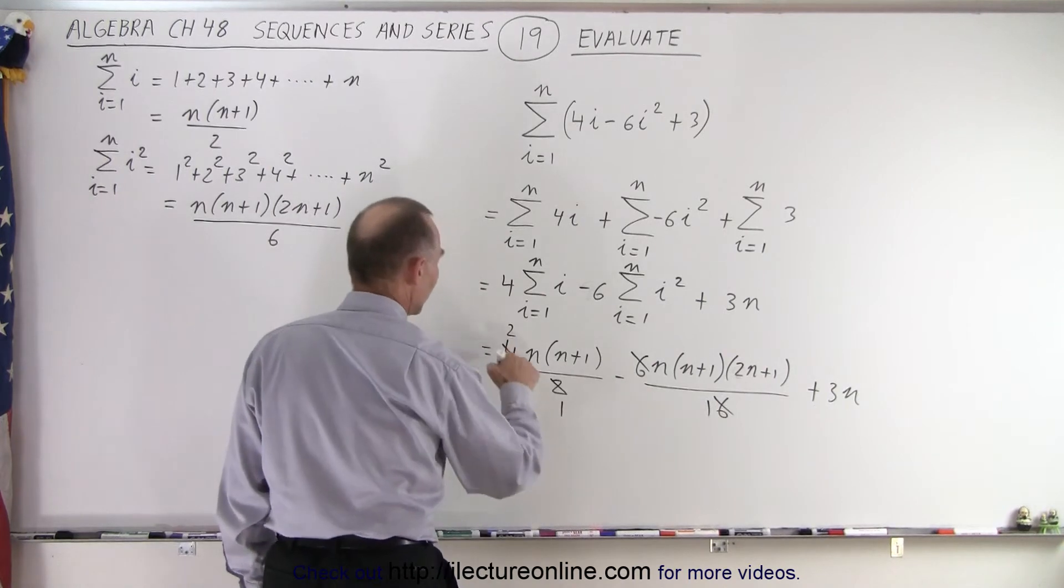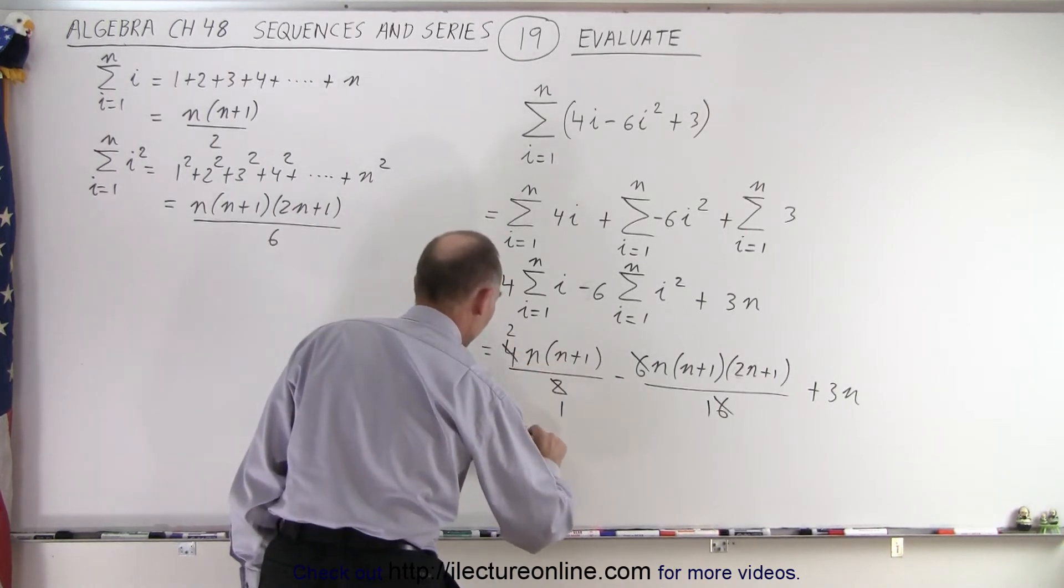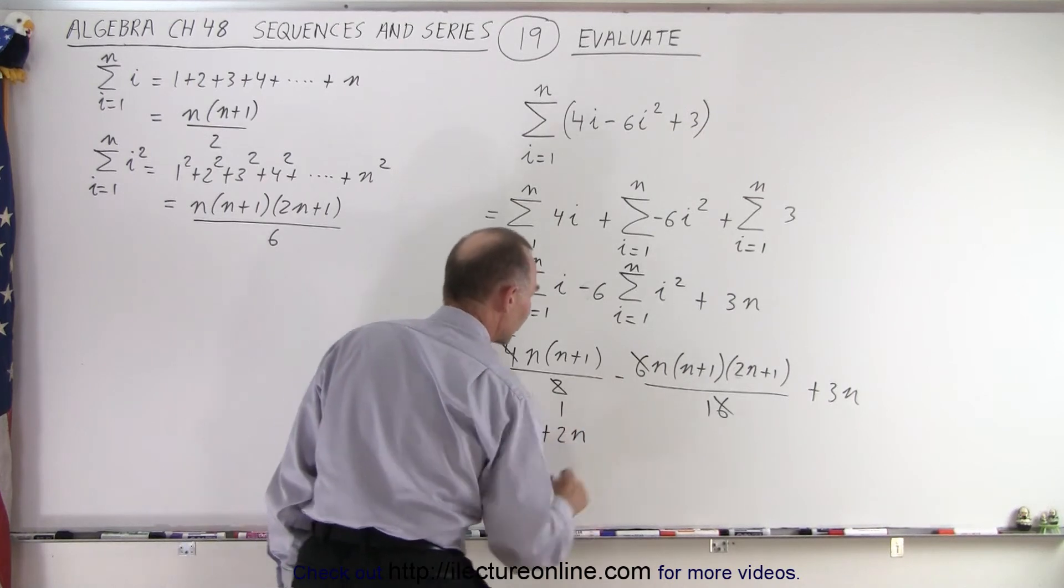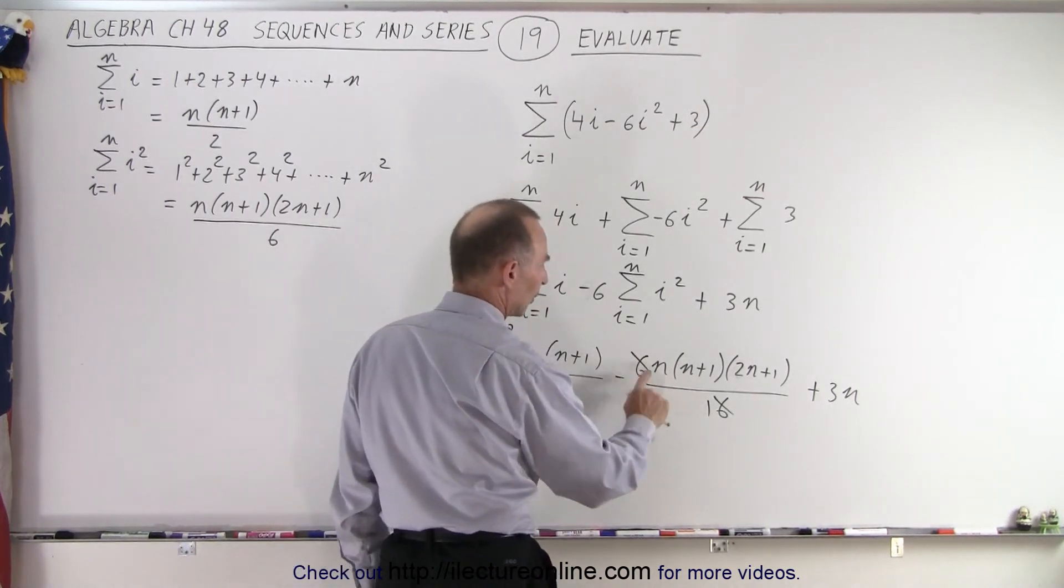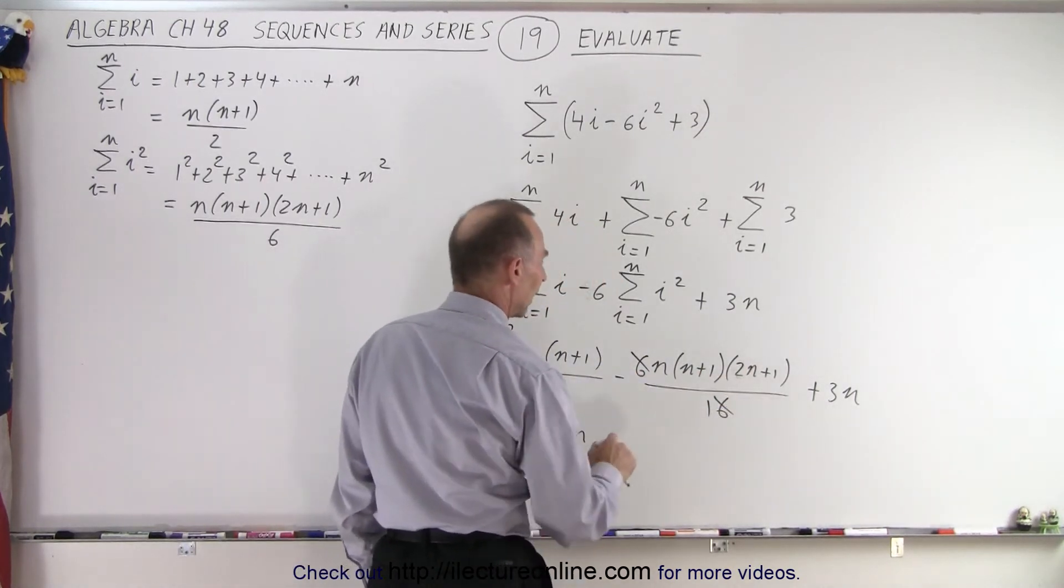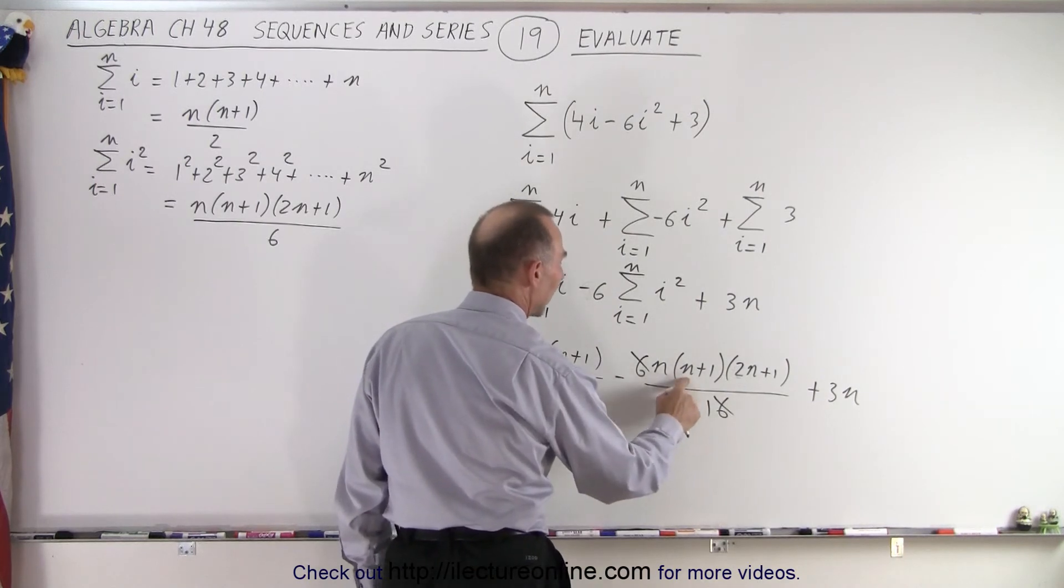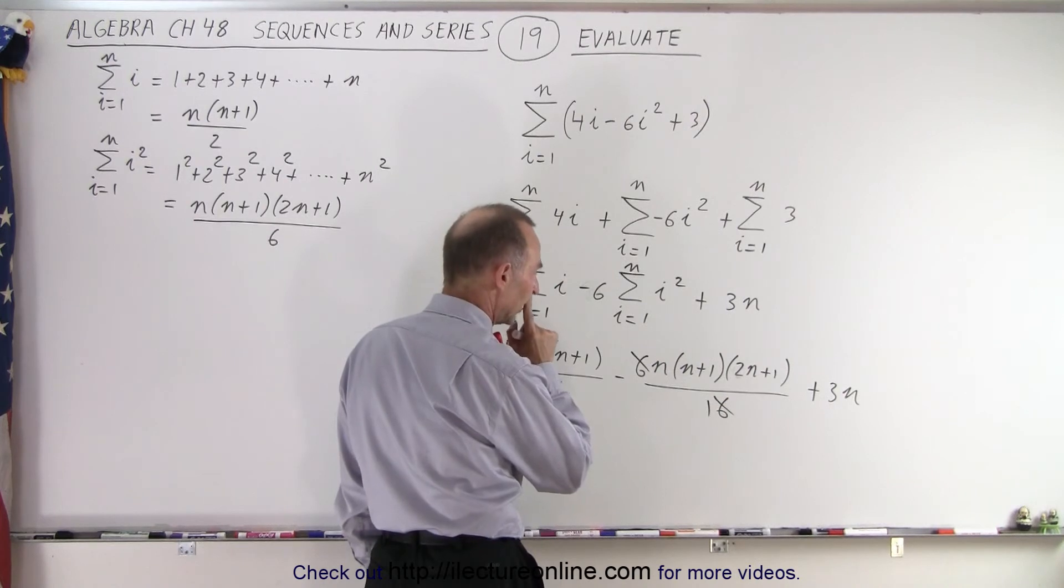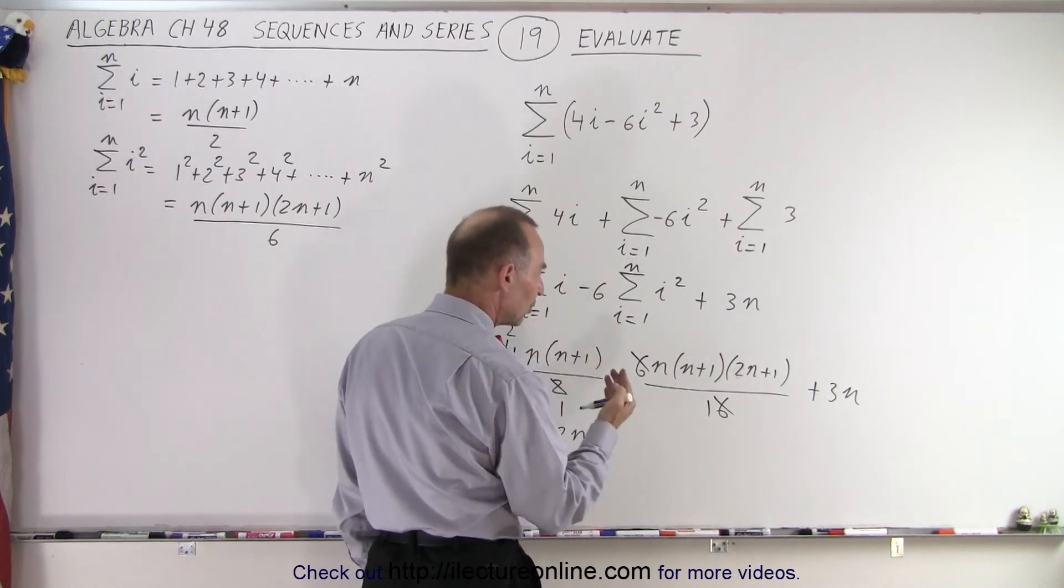So this is equal to 2n times n which is 2n squared, 2n times 1 which is plus 2n. Here everything is negative so we're going to subtract all these. And so we have n times (n plus 1) times (2n plus 1).